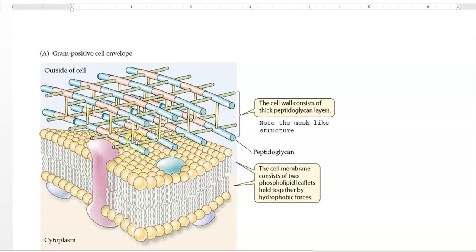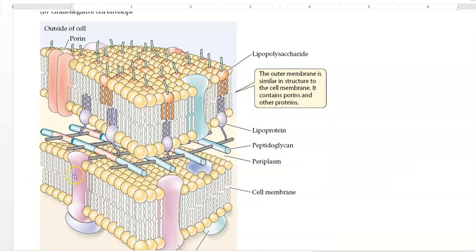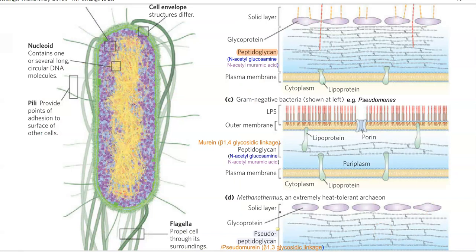The cell wall is more dense and thicker in gram positive organisms. In gram negative bacteria, there is a very thin layer of peptidoglycan, and apart from that they have an outer membrane. This outer membrane is lipopolysaccharide in nature and is present mainly in gram negative bacteria. Below the cell wall is the cell membrane of the bacteria.